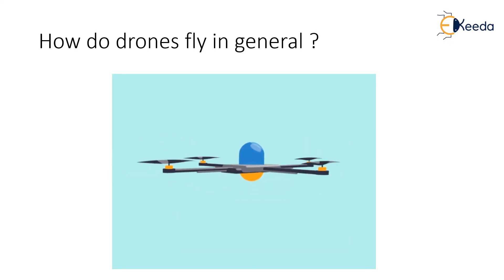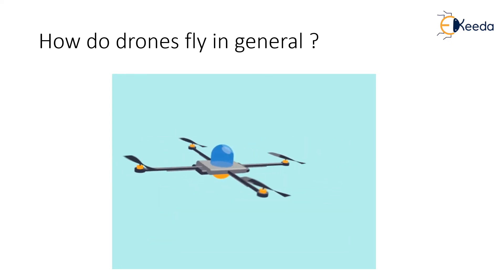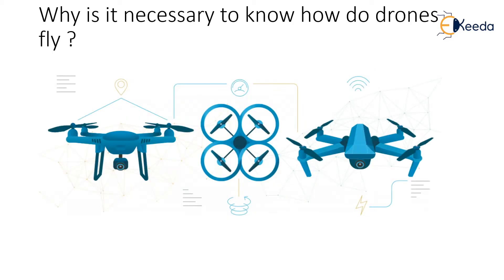Understanding how drones fly is important because with a small bit of experience, flying a quadcopter becomes automatic — you move the sticks on the remote controller or ground station and it sends the quadcopter in whichever direction you want. We don't need to think about what the motors or propellers are doing. However, if your quadcopter isn't flying correctly — maybe pulling in one direction or not hovering smoothly — that understanding helps.